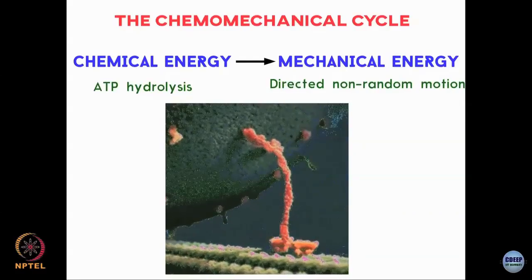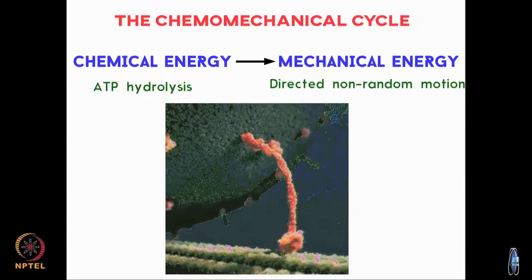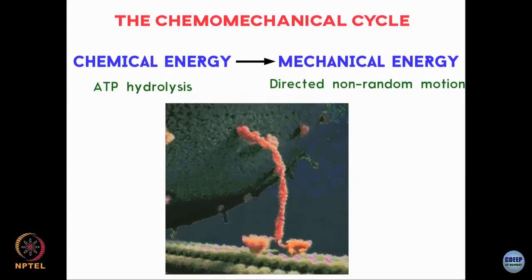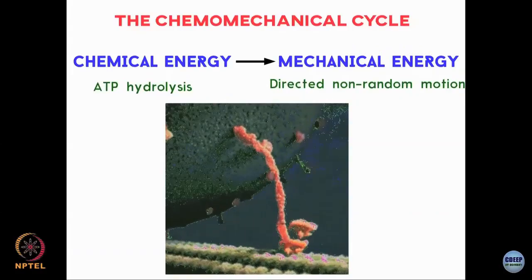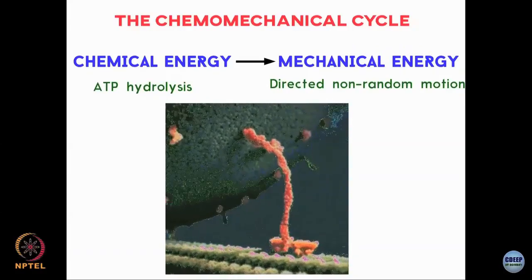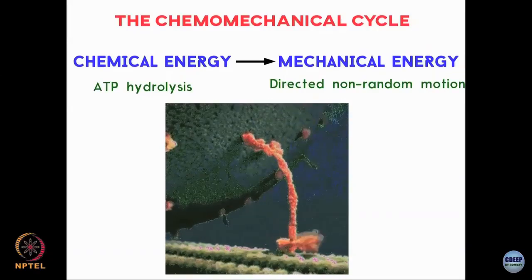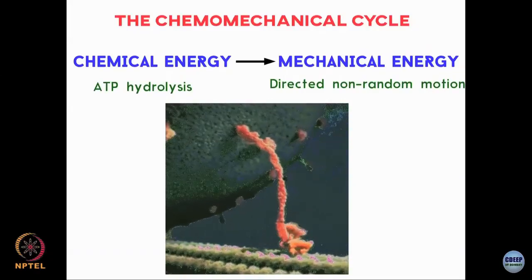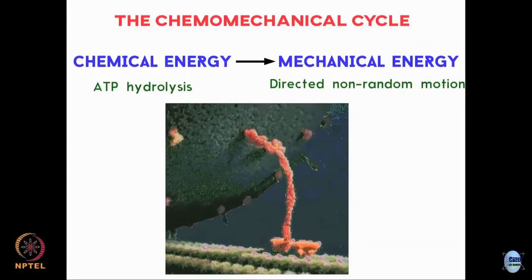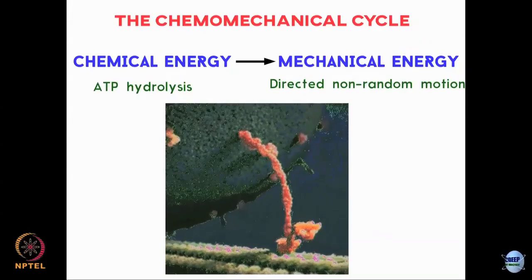This is not like a random walk where the motor takes one step this way or another step the other way. These motors move along because microtubules have a polarity - a minus end and a plus end. There is a directionality to the railway track of the microtubules, and the motors move directly along this underlying railway track. So this is one motor.